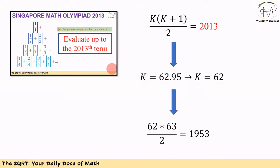Since we are asked to evaluate the expression up to the 2013th term, we first need to understand what value the 2013th term takes. The total number of terms ending at floor of K over K is K times (K plus 1) over 2. Setting this equal to 2013 does not yield an integer K, so we pick the nearest value, which is K equals 62.